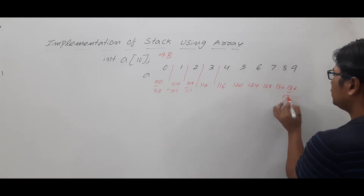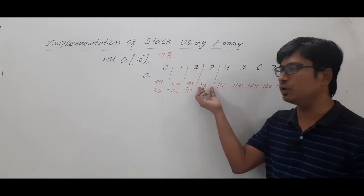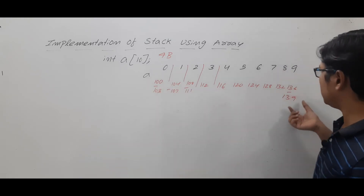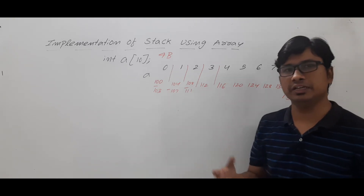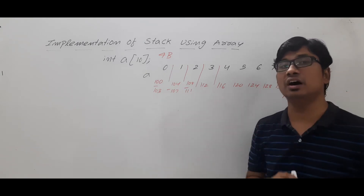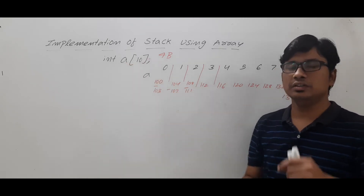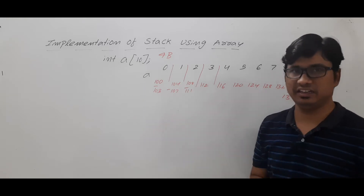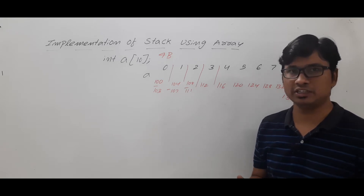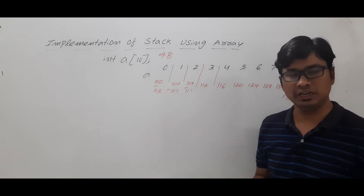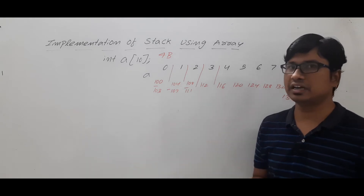Usually it will be represented in 4 bytes, but for understanding we refer to the first byte only. The base address is 100 and the last element is stored up to the 139th byte, so 40 bytes total are allocated. This is the limitation of the array — memory allocation is static. That limitation is overcome using dynamic memory allocation, which is the concept behind linked lists. We can implement the same stack using a linked list where there is no memory constraint, and I will discuss that in the next video.